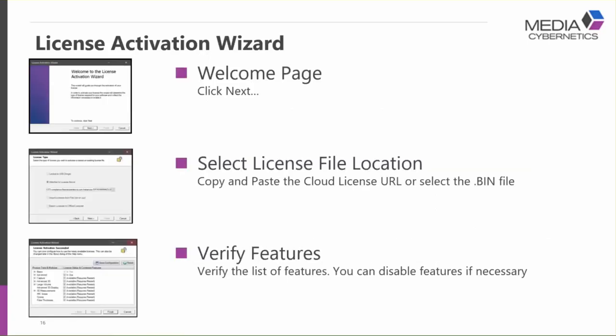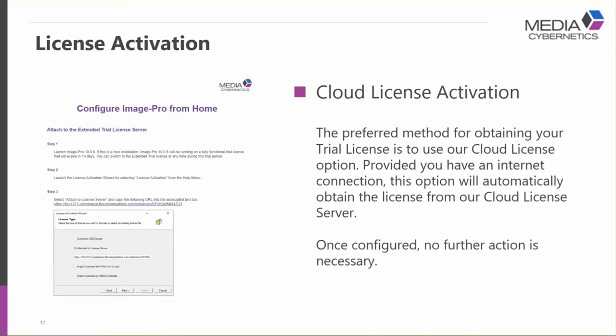In either case you'll reach the license activation wizard — a simple utility with three screens: a welcome page, a page to select which license to use, and a final page to review active licenses. To activate the cloud license, which is the preferred method, simply copy the link from step three on the website, select the option that says 'Attach to License Server,' paste that link into the box, and hit Next.